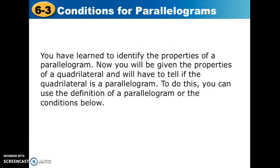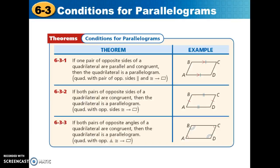In order to do that, we need to take a look at the conditions for being a parallelogram. The first theorem says if one pair of opposite sides of a quadrilateral are parallel and congruent, then the quadrilateral is a parallelogram. So our conclusion is that it's a parallelogram if we have a pair of opposite sides that also happen to be congruent.